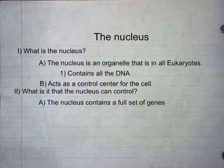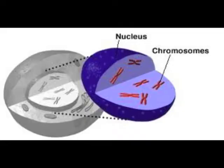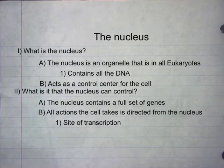What is it that the nucleus controls? Since the nucleus contains a full set of genes, it is able to act as an independent body, creating proteins and other such materials. Every cell is its own unique thing because of the nucleus, and all actions the cell takes are directed from the nucleus.